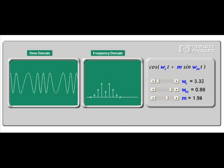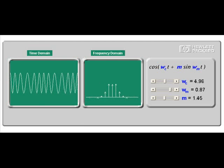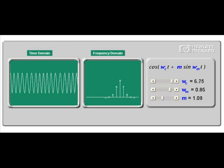And we can see here that the carrier, the middle one in the frequency domain, will vary to zero as we vary the modulation index, m.